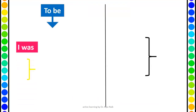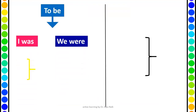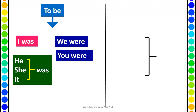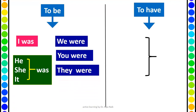For the 'to be' form: I was, we were, you were, he/she/it was, and they were. So for past tense, 'was' is used for I, he, she, and it. Whereas for the plural — we, you, and they — we use 'were'.